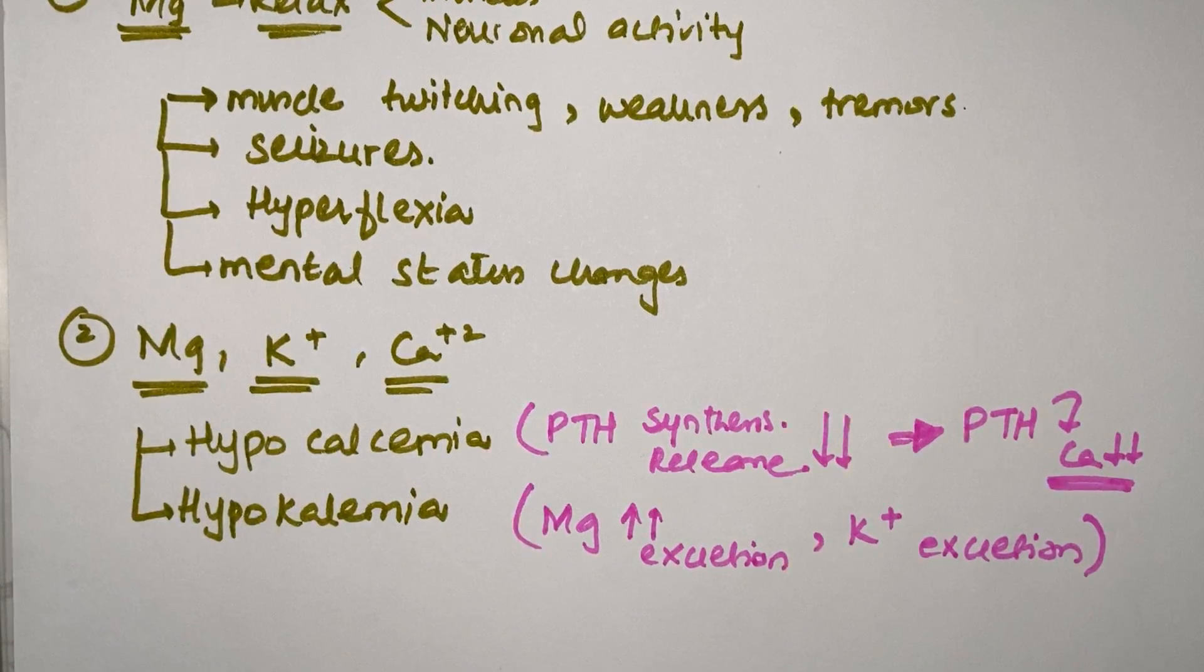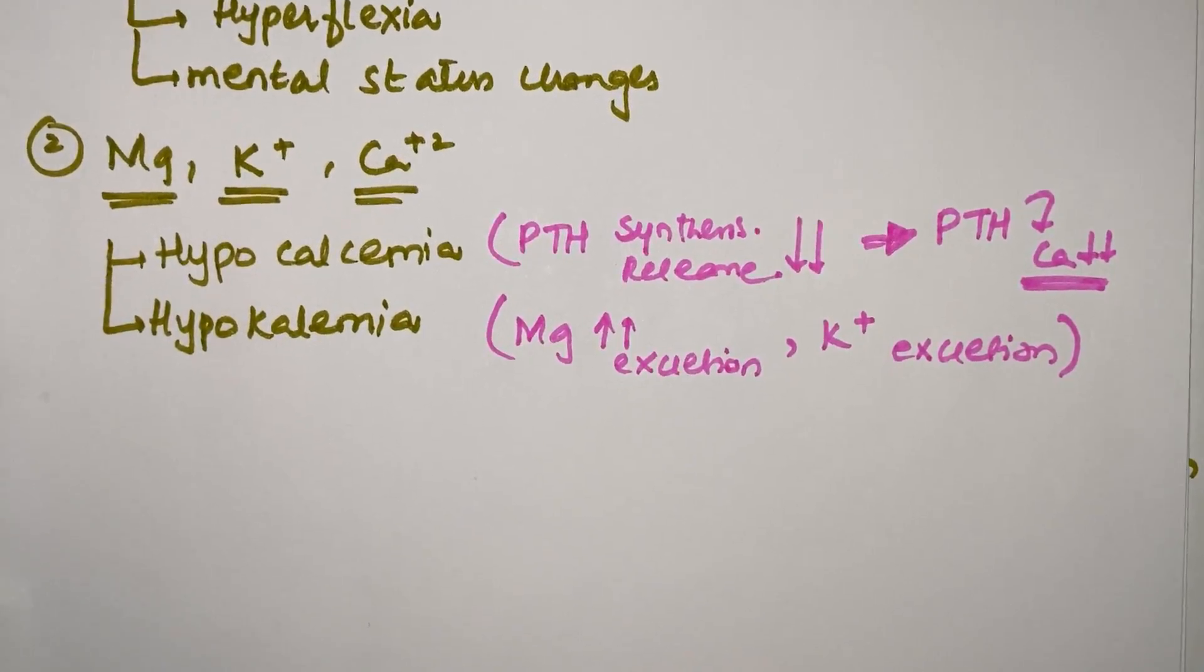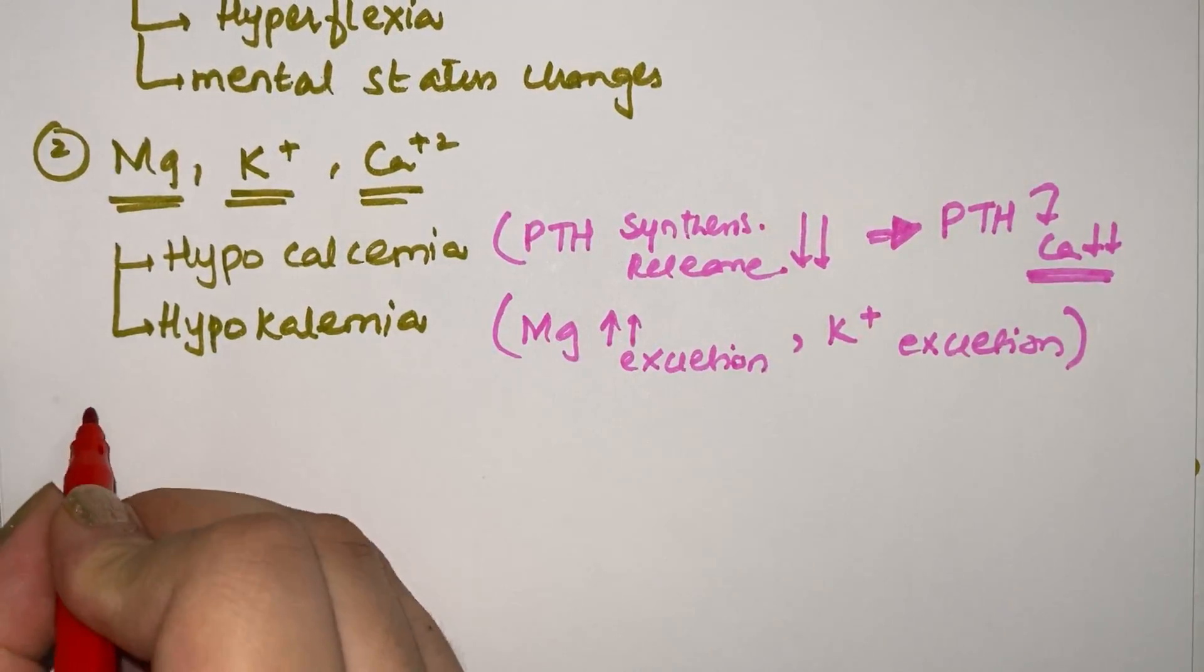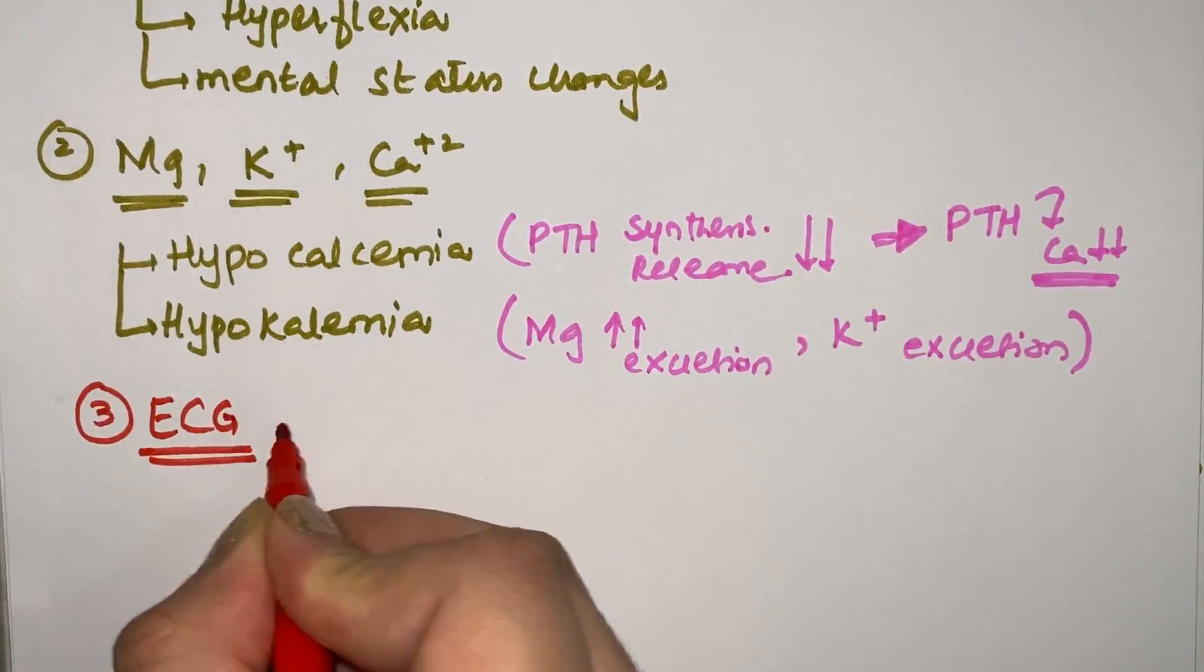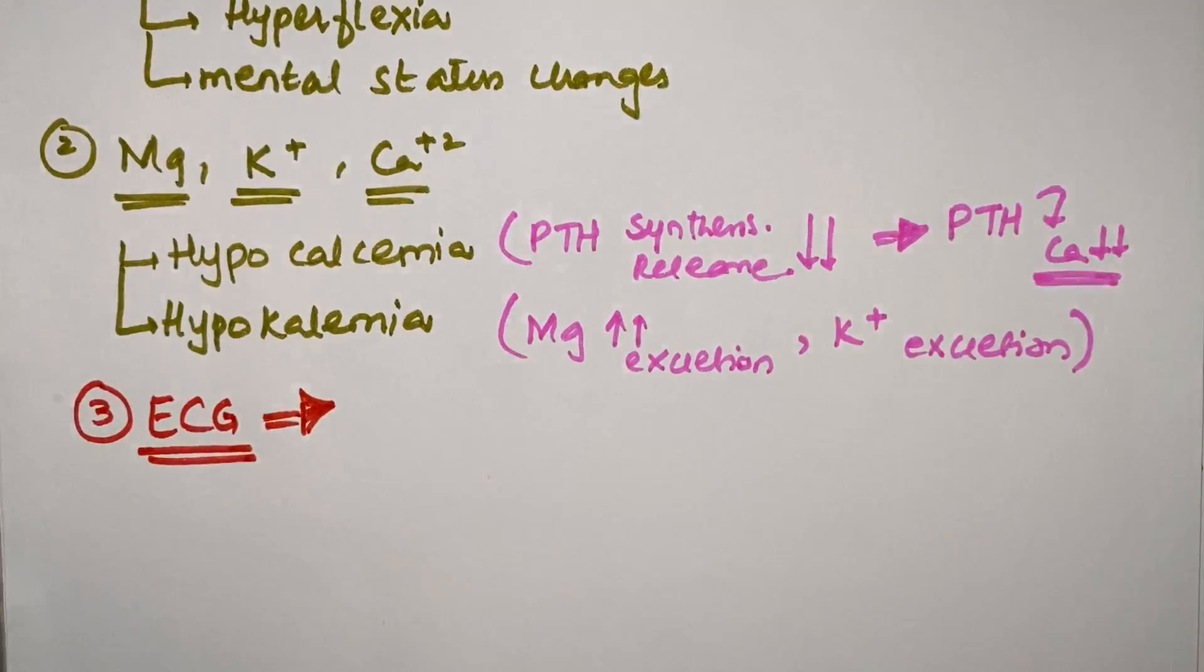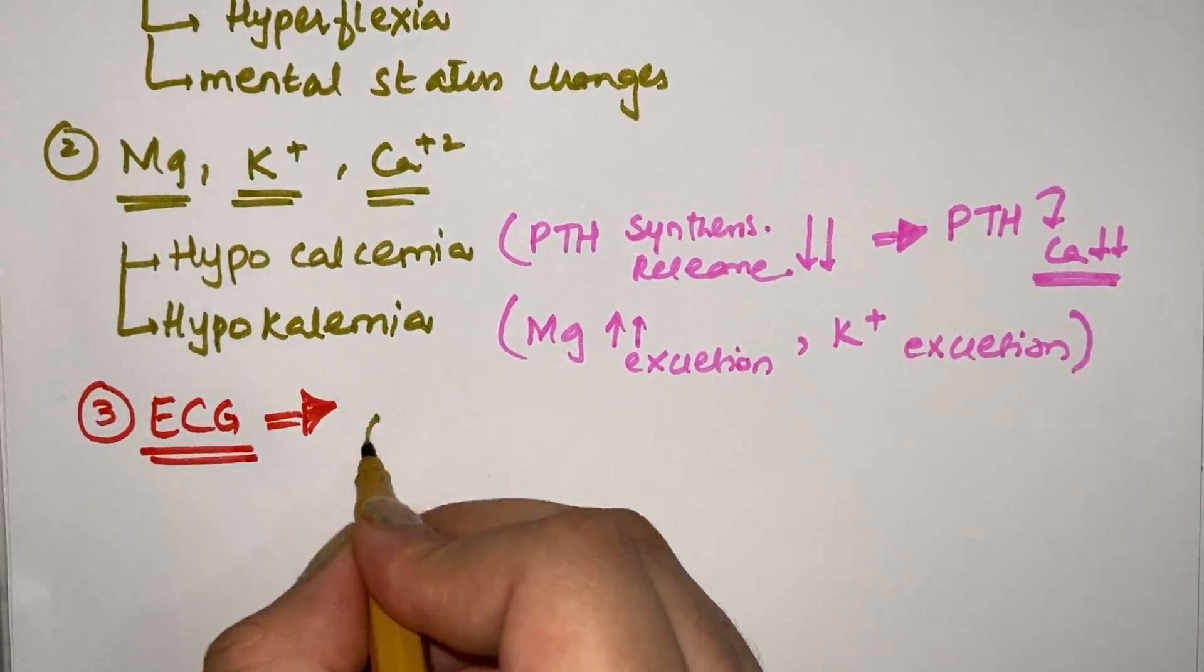Now when hypokalemia develops, first thing that will come in your mind is when we see ECG of the patient, it will show the same features as in hypokalemia. So ECG changes will show the same features. There is less potassium and less magnesium in the body.